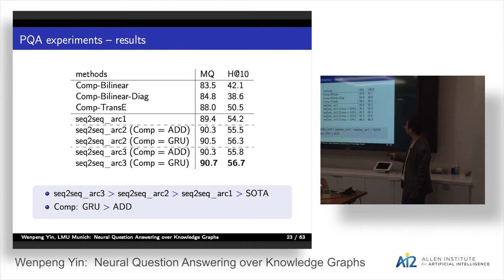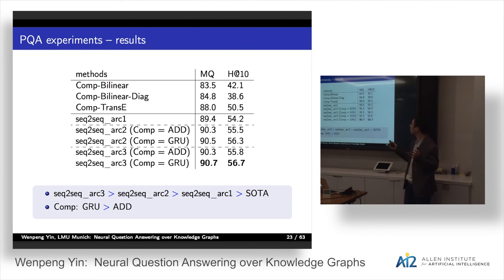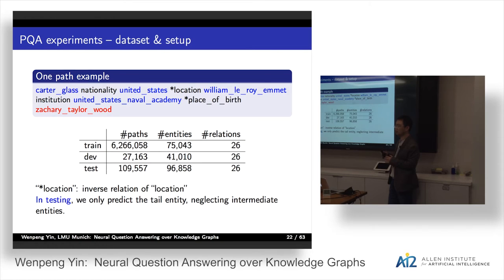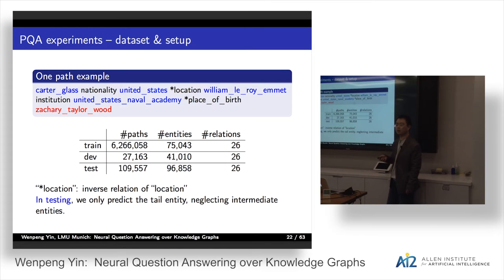In architectures two and three, we compose the head entity and the hidden state to predict; the composition function is add or bilinear, and we compare them. A question was raised about the dataset: almost all the relations have inverse relations. The dataset was released by a Stanford group — Kevin Gu. The original dataset provides head entity and relation sequence, and we enhanced it by adding intermediate nodes in the training set but not in the test set, so at test time we can only use the head entity and relations.